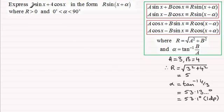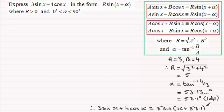So we can conclude then that 3 sine x plus 4 cosine x is identical to R sine x plus alpha. And R is 5, so we can write that as 5 times the sine of x plus alpha. And alpha, we've just worked out, is 53.1 degrees.